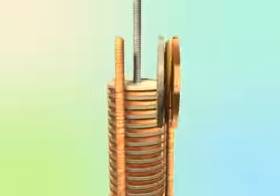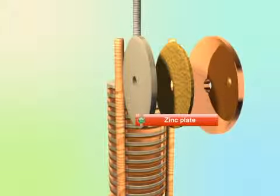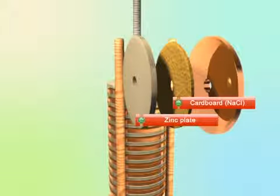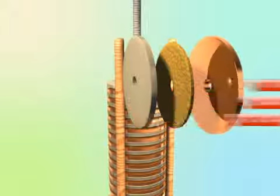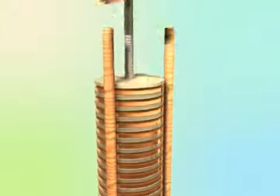The main parts of a Voltaic Pile are a zinc disc, a cardboard soaked in salt water, and a copper plate. These elements were placed in series to increase the voltage output.